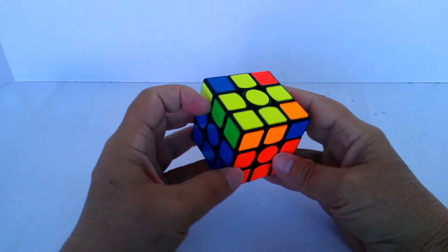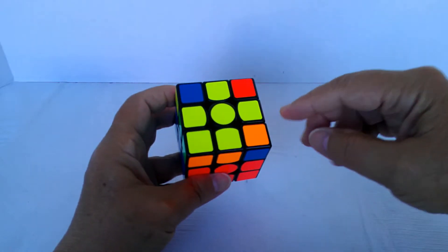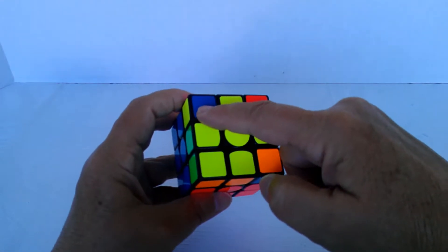All right, this is the anti-sune situation. We've got the first two layers solved. We've got everything on top yellow except for three of the corners.